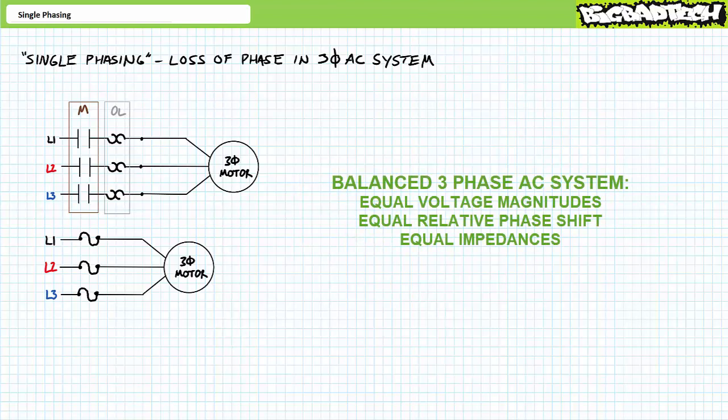As you are no doubt aware, a balanced three-phase AC system is characterized by three voltage phases of equal magnitude with a 120-degree relative shift between them, and a wye-delta configured load with three identical impedances. Balanced three-phase AC systems experience predictable relationships between line and load current and line-to-line and load voltages. The predictability of these relationships allows us to take time-saving shortcuts such as the single wattmeter method when calculating electrical properties like current and power.